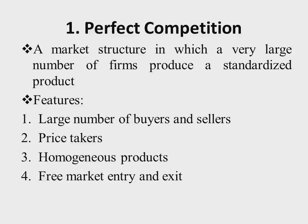Under perfect competition, there is perfect flow of information. If any firm decides to charge a higher price, consumers will be well informed and will deviate and go to another seller of the same product, because these products are considered to be perfect substitutes. A good example is agricultural products, like maize. There are many producers of maize and many buyers, and because maize is maize regardless of which farmer produced it, a person selling at a higher price is likely to lose customers.